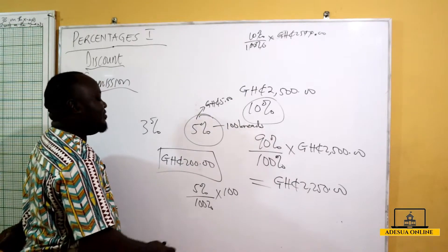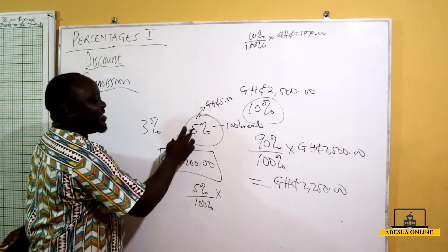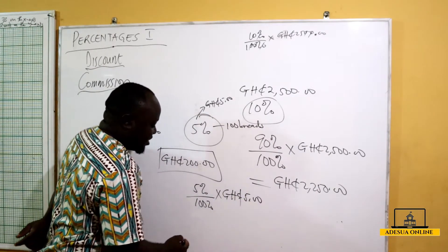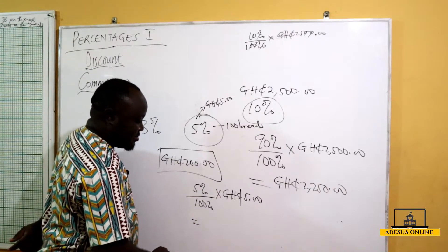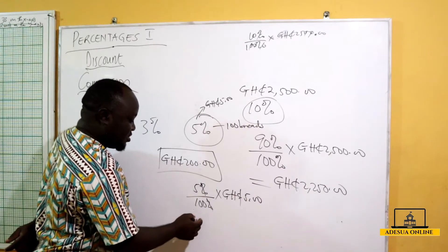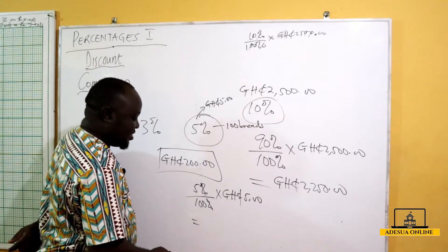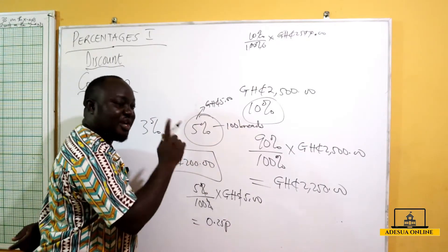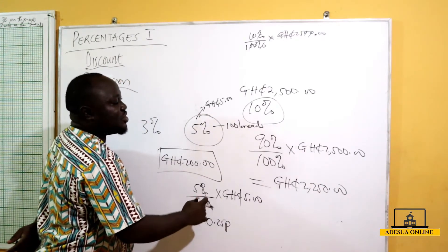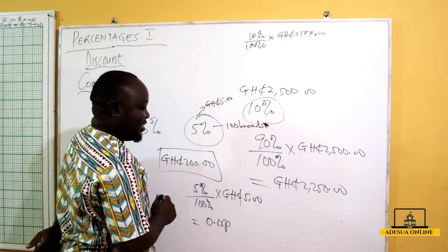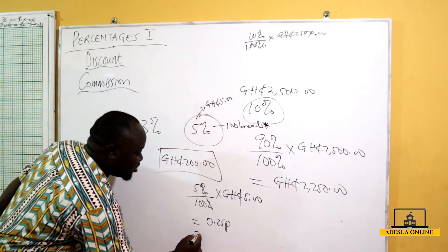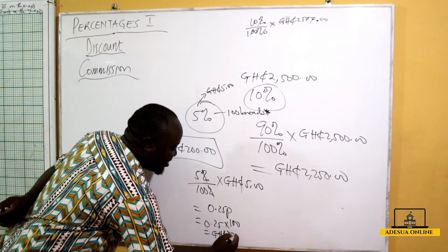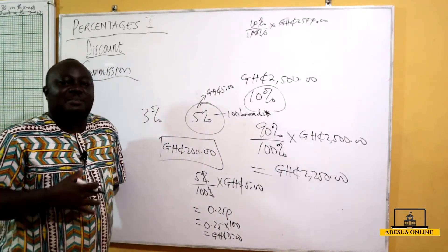So 5 over 100 times 5 Ghana cedis gives us 25 over 100, which is 0.25 Ghana cedis. That is the amount you get for each bread you sell — 0.25 Ghana cedis per bread. Now if you sold 100 breads at the end of the month, we multiply 0.25 times 100, which gives us 25 Ghana cedis as your total commission.